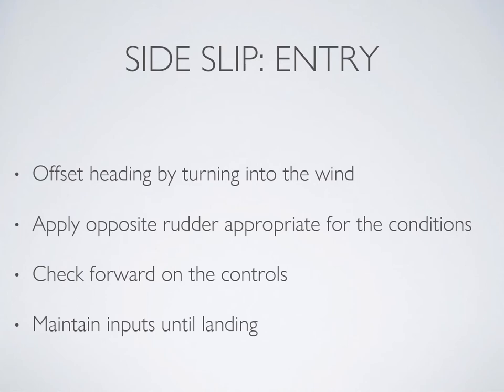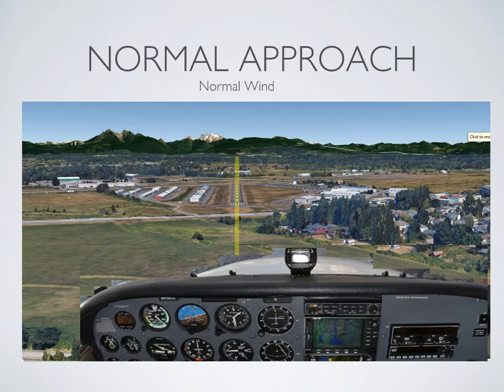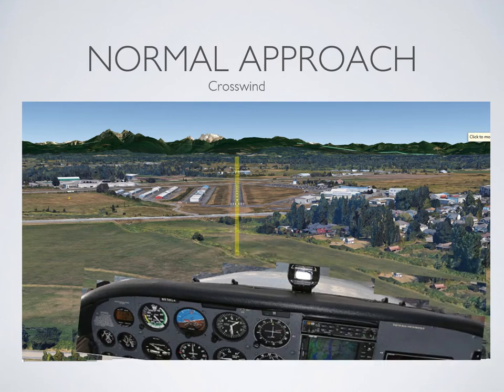To enter a side slip: first offset your heading by turning into the wind, then apply opposite rudder as required. Make sure that the nose does not come up too much and really hold your airspeed. Maintain these inputs for as long as needed or even right up until the landing. Your normal approach will have you lined up on centreline, nice and straight, with the runway in front of you — not in front of the nose of the airplane.